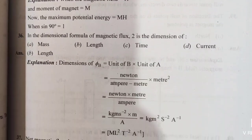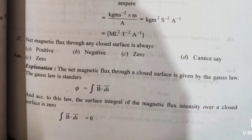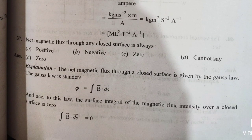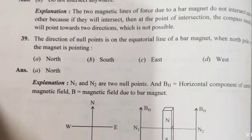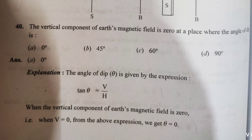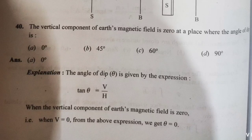Questions 35 and 36 are important — check those yourself. For question 37: the net magnetic flux through a closed surface is always zero. For question 38: two magnetic field lines of a bar magnet do not intersect — we discussed this earlier. Questions 39 and 40 are easy. That completes the understanding-based questions. Tomorrow's video will start application-based questions. Thank you so much.